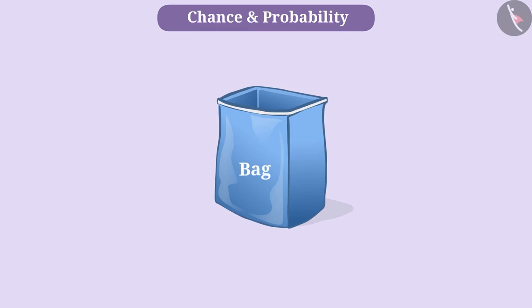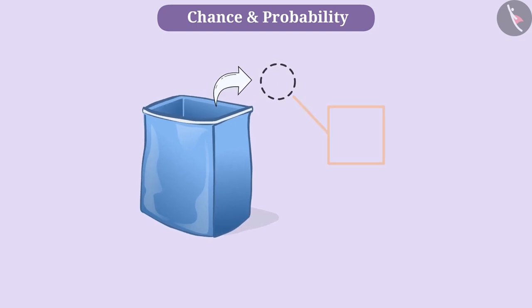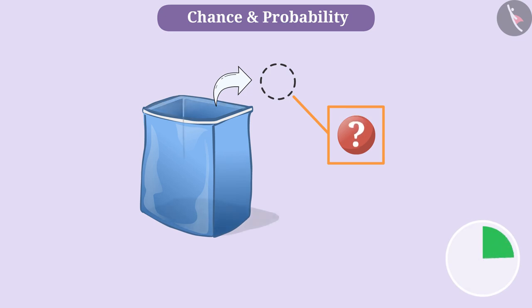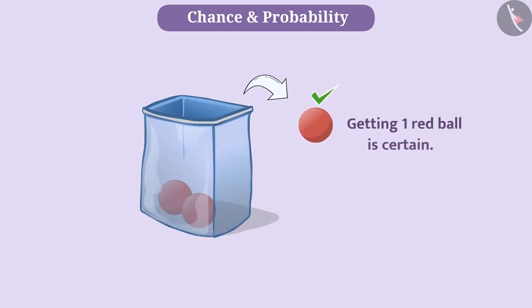Here is a bag in which there are three red balls. If we take out one ball without seeing in it, will it be a red ball? Absolutely right. Without seeing, taking out one of these three red balls and getting a red ball is certain.